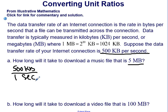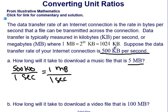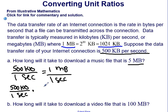We don't have kilobytes — we have five megabytes — so we need to know how many megabytes per second that equals. Our conversion factor is: one megabyte equals 1,024 kilobytes. So we take 500 kilobytes per one second and multiply by one megabyte over 1,024 kilobytes, placing kilobytes in the denominator so they cancel out.